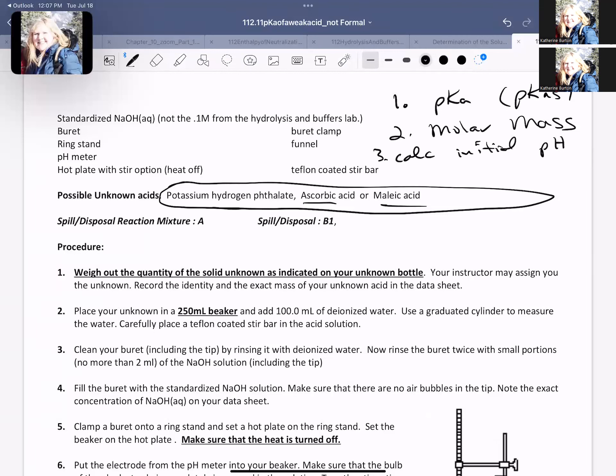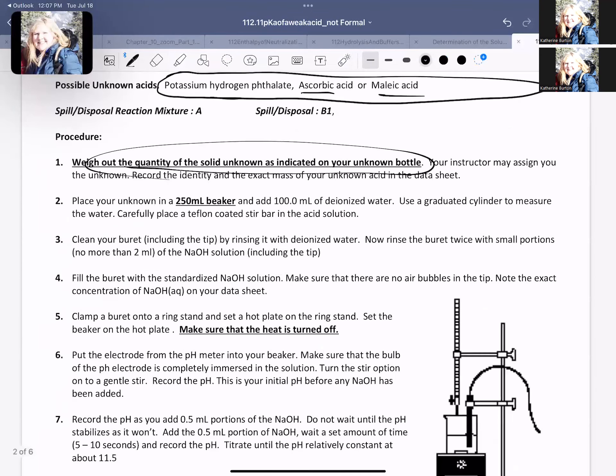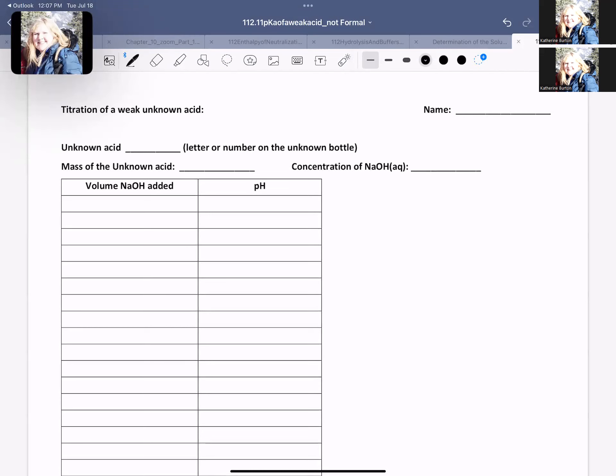With this in mind, we have to make sure we've recorded our data correctly, and we're going to have to graph this. So you are going to have weighed out the amount as indicated on the bottle. Make sure you record that. Make sure you have recorded the molarity of your sodium hydroxide, and we're just going to titrate.